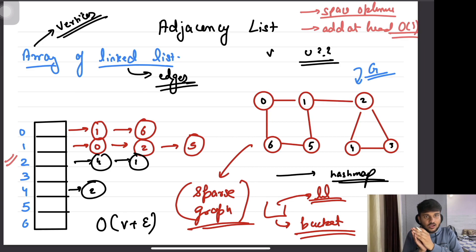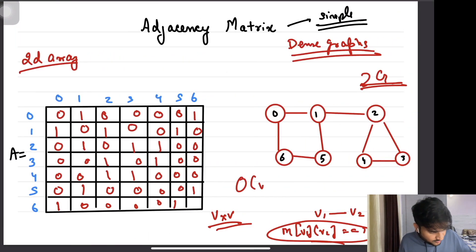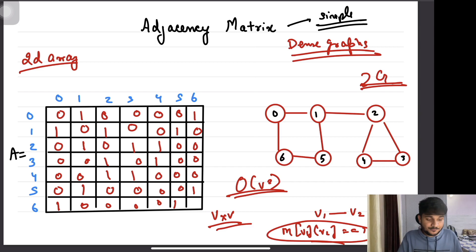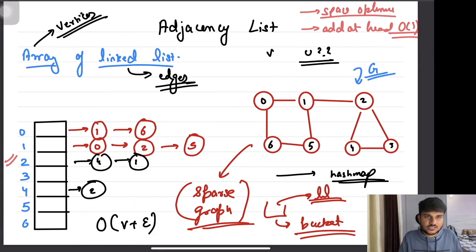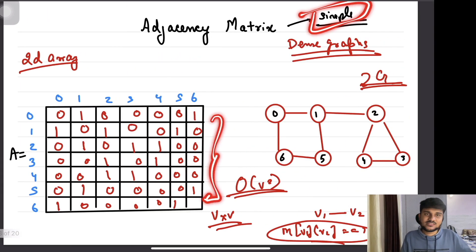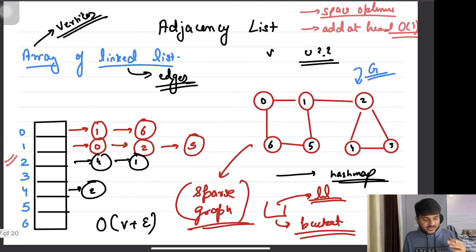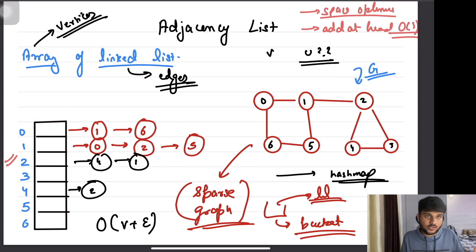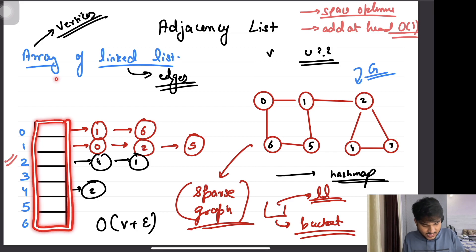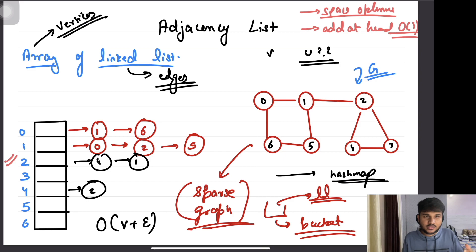In a dense graph, the adjacency list also transforms from O(V+E) to O(V²) because every vertex has approximately V−1 neighbors, so the space becomes O(V²) anyway. The problem with adjacency matrix is that even for a sparse graph — where there are not many edges — it still takes O(V²) space, whereas the adjacency list takes only O(V+E). Also, adding a new vertex in adjacency list is like doubling the array size, which is amortized O(1), whereas in the adjacency matrix you need to add a new row and a new column and copy V² elements.